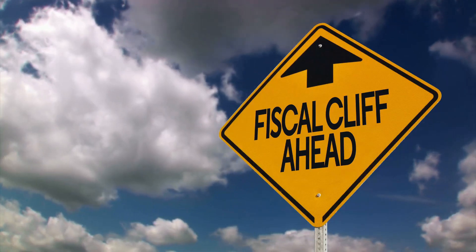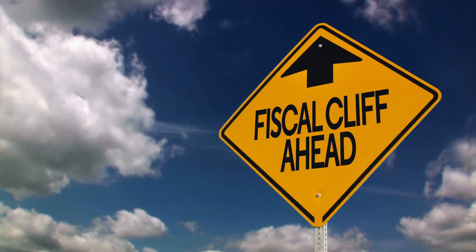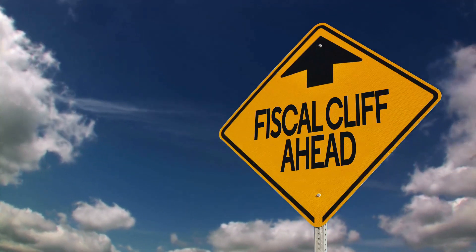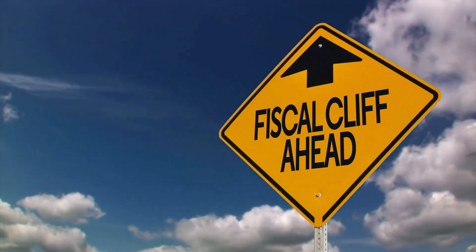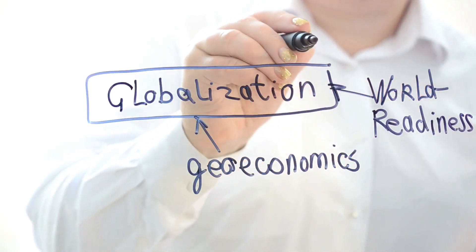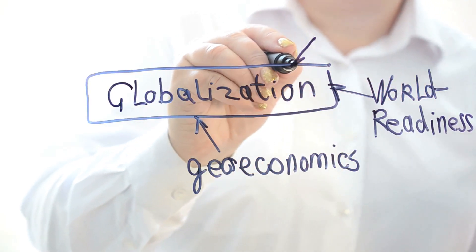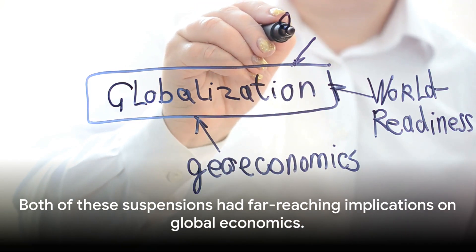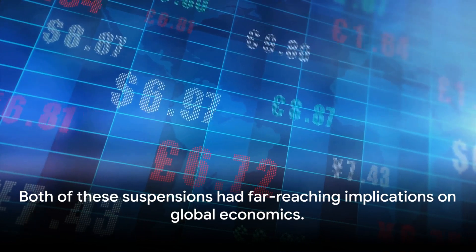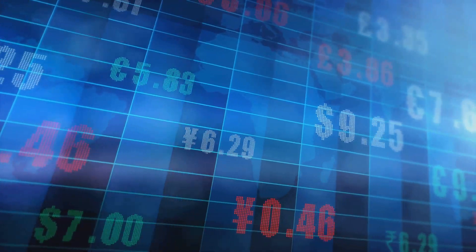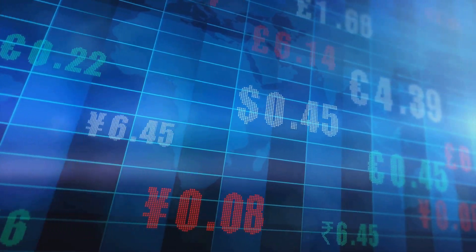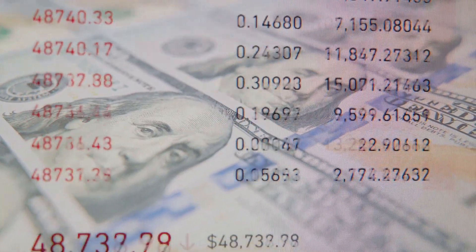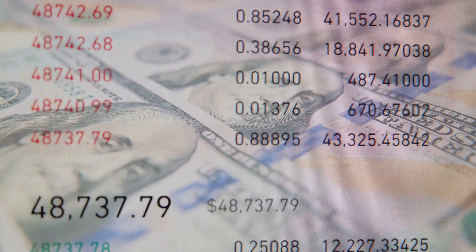The Bretton Woods system, with its fixed exchange rates and gold standard, was a product of a different era. By the time it was suspended, the world economy had evolved and the system was no longer tenable. Similarly, the suspension of the US debt limit was a reaction to an unprecedented debt crisis — a crisis that demanded innovative solutions.